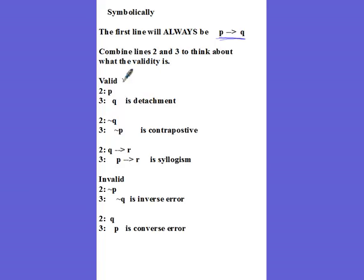So for valid statements, true statements, we have three scenarios. If line two and three go P Q, that's true and it's detachment. If line two and three go not Q, not P, that's true. It's contrapositive. If line two and three go Q R P R, that's syllogism. Our invalid statements are not P, not Q. That's inverse. And then two and three, if it's Q and P, that is a converse error. Bonus thing you didn't know.